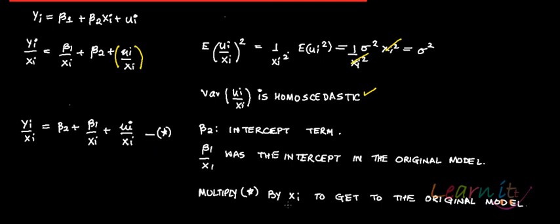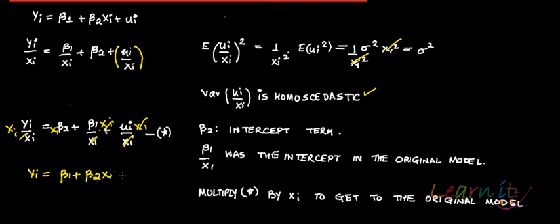In case you want to get back to the original model, you multiply the entire new model by xi, and you get back to the original model: yi equals beta 1 plus beta 2 xi plus ui.